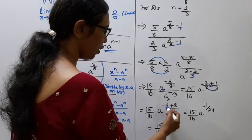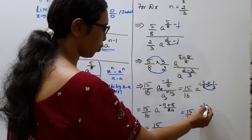15 by 16, a power minus 9 plus 8, minus 1 by 24.